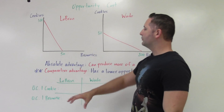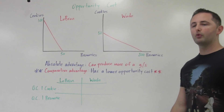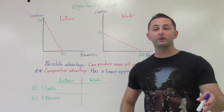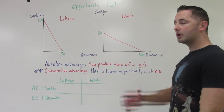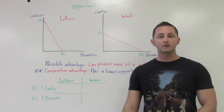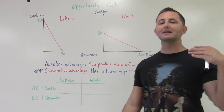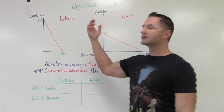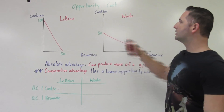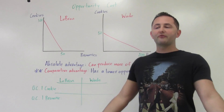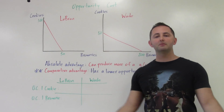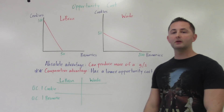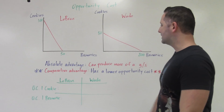In this example we have two terms: absolute advantage and comparative advantage. Absolute advantage is the easy one, and it's also the one that doesn't matter as much. Absolute advantage just means you can produce more of that good or service — whoever has the higher number has the absolute advantage. LeBron can make 100 cookies, Wade can only make 50, so LeBron has the absolute advantage in making cookies. When it comes to brownies, LeBron can make 50, Wade can make 200, so Wade has the absolute advantage in making brownies.